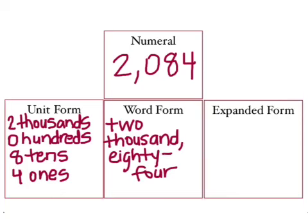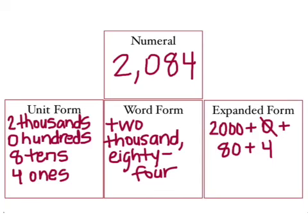And lastly, expanded form. So we have the 2 is equivalent to 2,000. That's the value. We add that on to no hundreds. If you want to, you can put that, or you can leave it out. It's your choice. Then we move to our tens place, and there's an 8. So that's 80. And our ones place, there's a 4. So we can have 2,000 plus 0 plus 80 plus 4 will bring us back to our original numeral of 2,084.